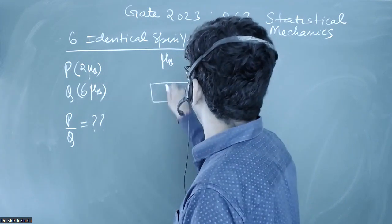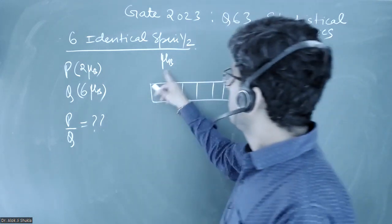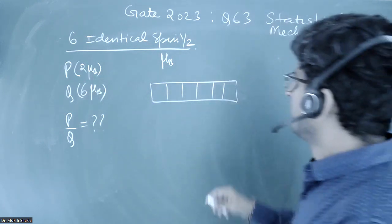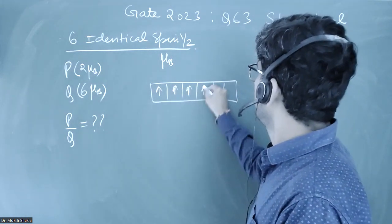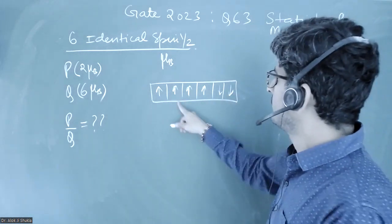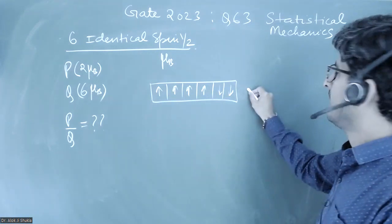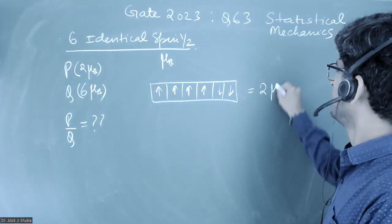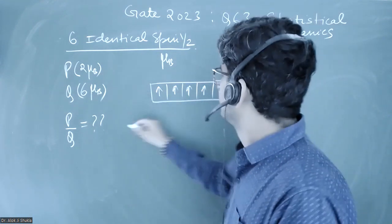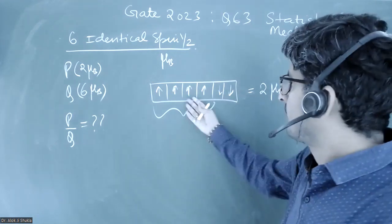We have six spins: one, two, three, four, five, and six. To get a net magnetic moment of 2μ_b, four spins must be up and two must be down. Adding them: four μ_b minus two μ_b equals 2μ_b. So if four are spin-up and two are spin-down, the net magnetic moment is 2μ_b.